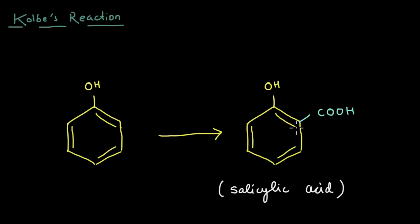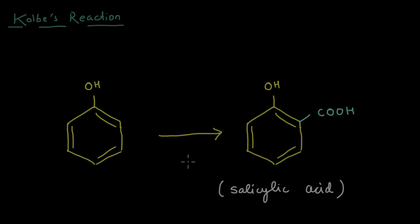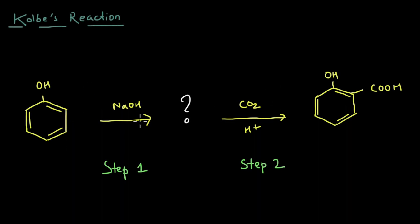We know what the end product is, but we haven't covered what the reagents are or how we get from phenol to salicylic acid. The reaction is broken down into two steps: the first step is reaction with NaOH, and the second step is reaction with CO2 followed by addition of H+. In the first step, NaOH is a base and phenol is an acid, so this is an acid-base reaction.